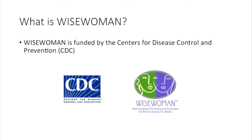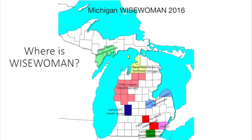Our funding comes from the Centers for Disease Control and Prevention, also known as CDC. We do have some state funding, but the majority comes from the CDC. Right now in 2016, we are in eight agencies across 23 counties. It's mostly in rural Michigan, but we do have some small programs in Grand Rapids, Saginaw, and Detroit, and soon we'll be up and running in Lansing and Ypsilanti.